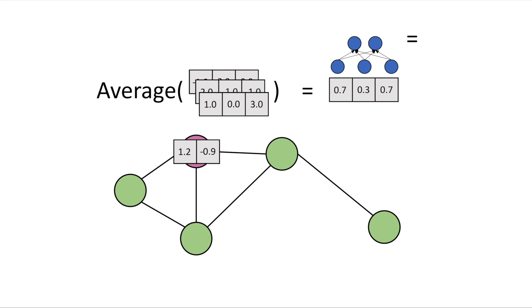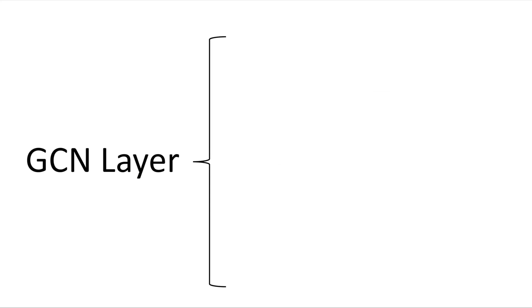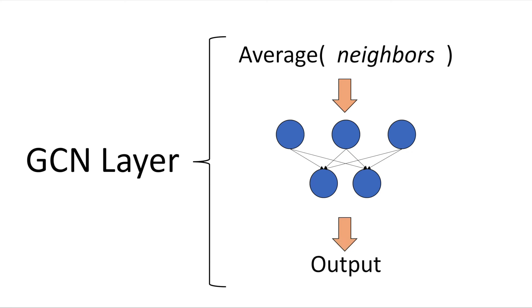When talking about how a single GCN layer works throughout this video, I'll keep coming back to this refrain. First aggregate the neighbors, then pass that to a standard neural net. If you can keep this clear, GCNs will be a lot easier to understand.